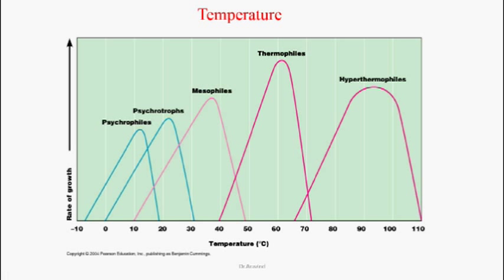Depending upon temperature, there are five types of bacterial organisms. Organisms growing at freezing temperatures (minus 10 to 20°C) are called psychrophiles. Those growing at 0 to 30°C are called psychrotropes. Organisms growing at 10 to 50°C are called mesophiles — most human pathogens fall here. Those growing at 40 to 70°C are thermophiles, and those growing at 65°C to above 100°C are hyperthermophiles.